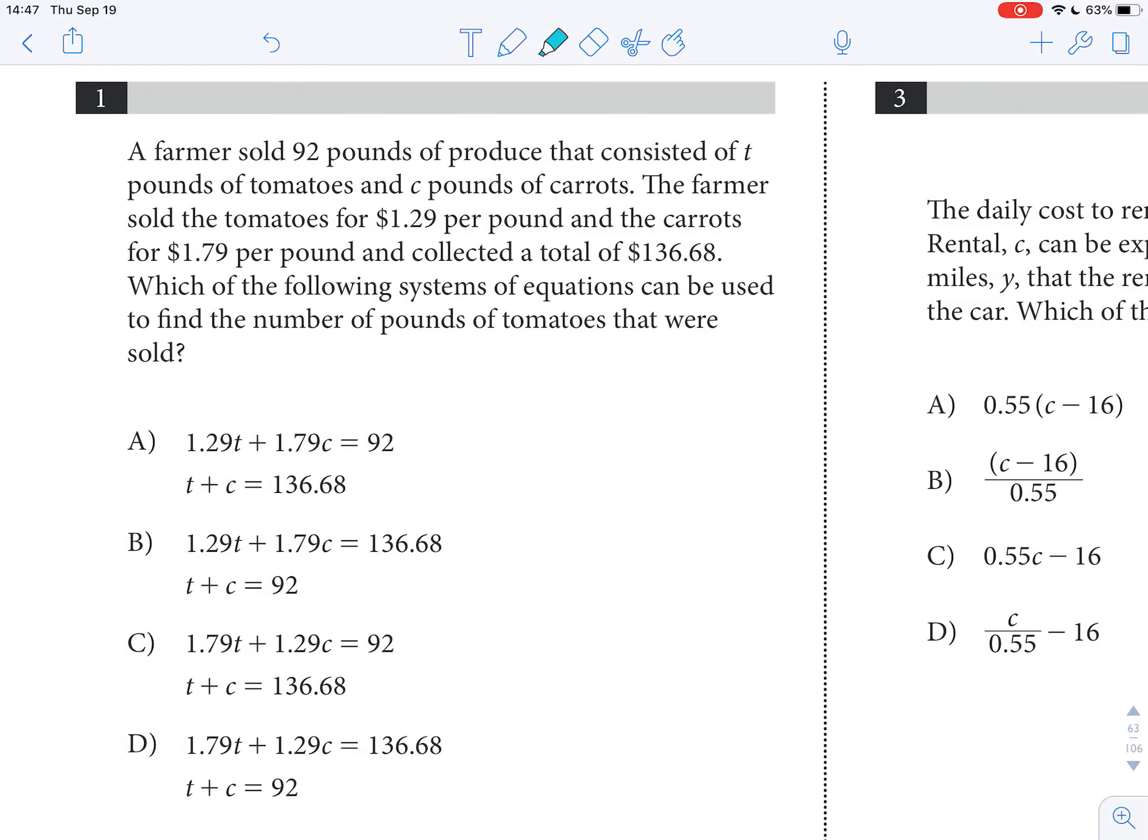All right, so a farmer sold 92 pounds of produce that consisted of t pounds of tomatoes and c pounds of carrots.